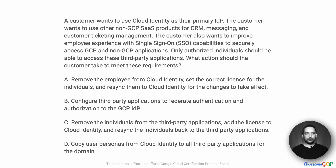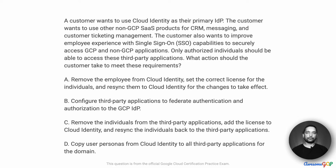In this project requirement, a customer wants to use Cloud Identity as their primary IDP. The customer wants to use other non-GCP SaaS products for CRM, messaging, and customer ticketing management. The customer also wants to improve employee experience with single sign-on (SSO) capabilities to securely access GCP and non-GCP applications. Only authorized individuals should be able to access these third-party applications. What action should the customer take to meet these requirements?